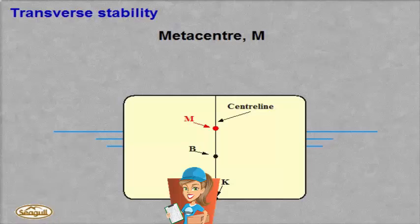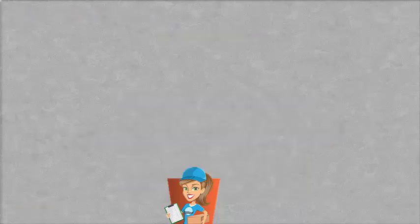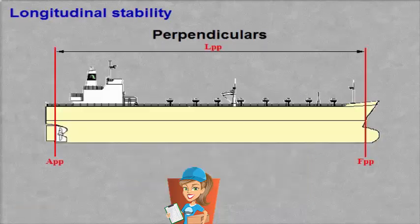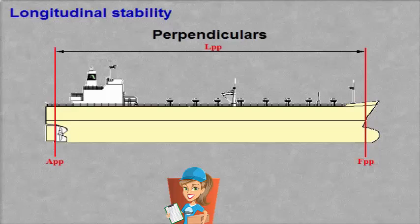Perpendiculars are constructed vertical lines forward and aft used for measurement purposes. The forward perpendicular goes through the forward end point of the constructed waterline. The aft perpendicular goes through the rudder shaft. In calculations, the length between the perpendiculars is often used and referred to as LPP.